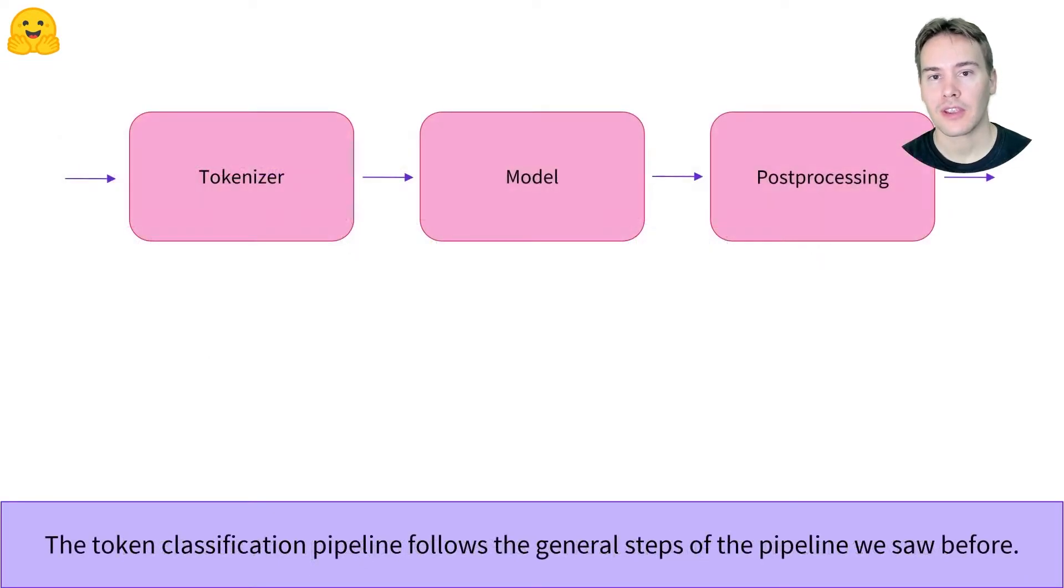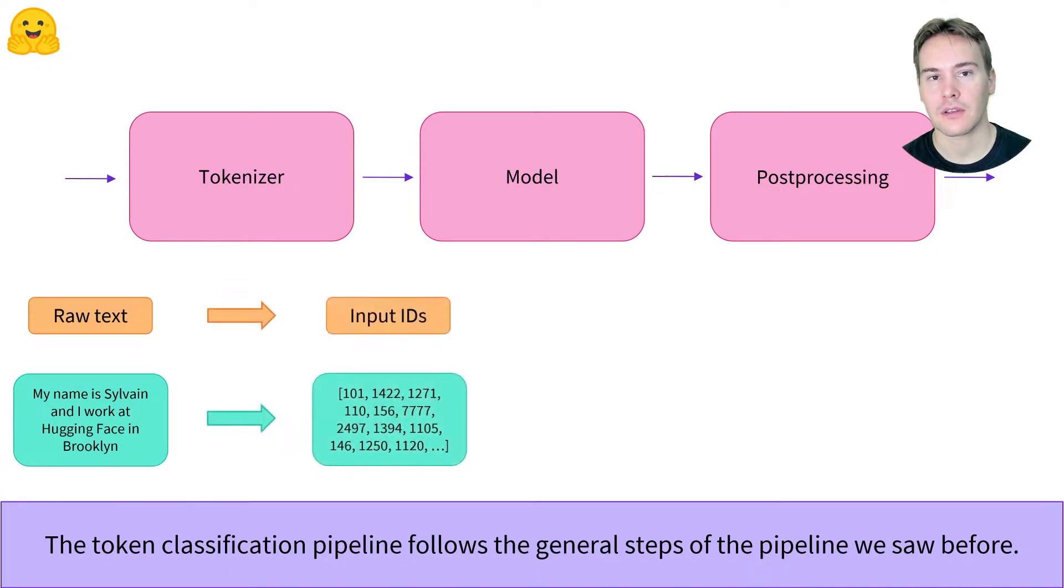The token classification pipeline works the same way as the text classification pipeline we studied in the previous video. There are three steps: the tokenization, the model, and the post-processing.